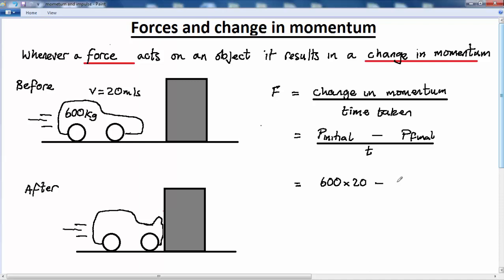Final momentum is zero because it clearly comes to rest. And there's a finite time during which the collision takes place which we'll say is one and a half seconds. So it takes 1.5 seconds for the car to completely come to rest. That comes to 8,000 newtons. So during this collision a force of 8,000 newtons is exerted on the car.